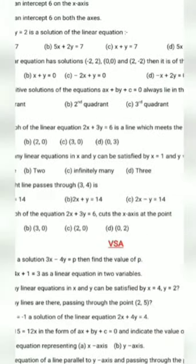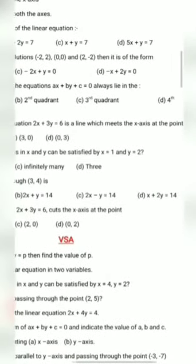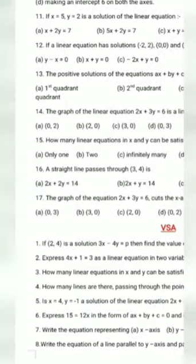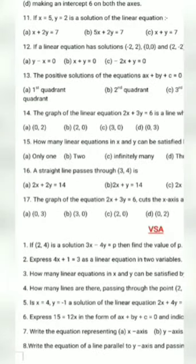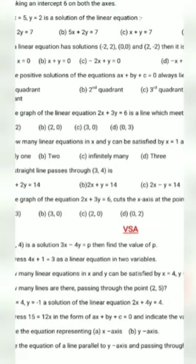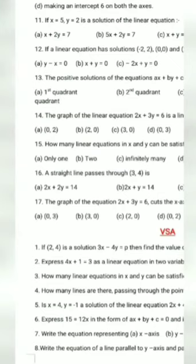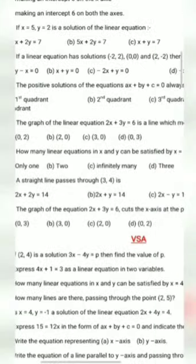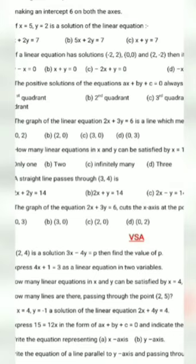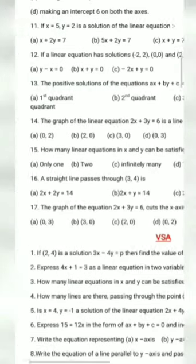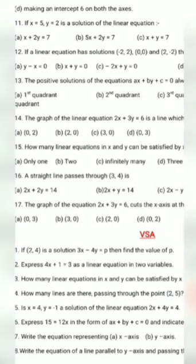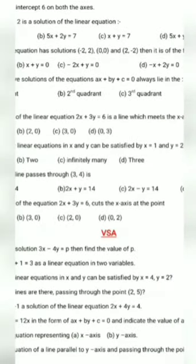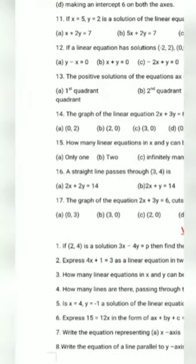The positive solutions of the equation Ax plus By plus C equal to 0 lie in the first quadrant. In the first quadrant, all x and y are positive, and they have told that A, B, and C are positive. So the solutions will lie in the first quadrant.